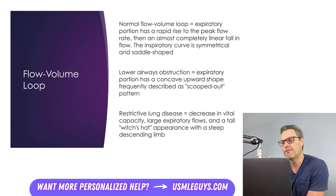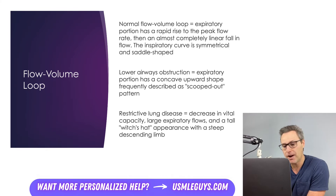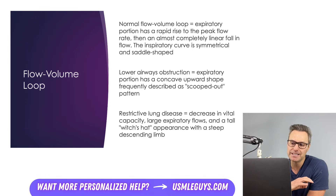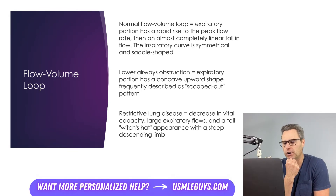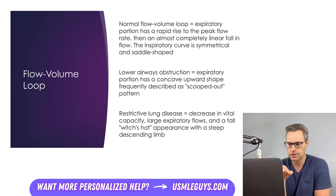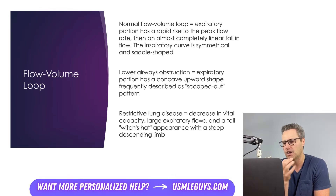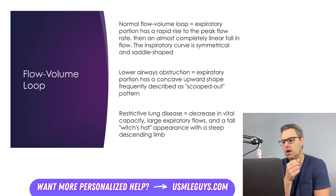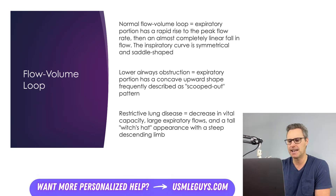That flow volume loop we were just looking at is an example of a normal flow volume loop. The expiratory portion has a rapid rise to peak flow rate, then an almost completely linear fall in flow. The inspiratory curve is symmetrical in saddle shape. The flow volume loop in a lower airway obstruction would show expiratory portions of the loop with a concave upward shape, frequently described as having a scooped out pattern. Restrictive lung diseases show a decrease of vital capacity, large expiratory flows, and a tall witch's head appearance with a steep descending limb.